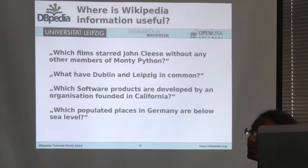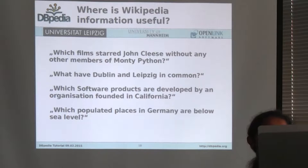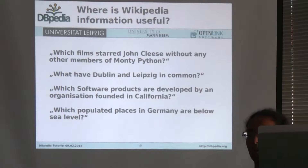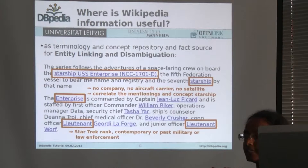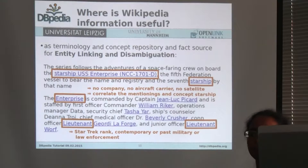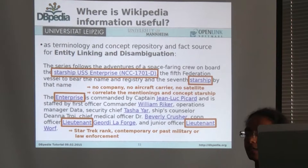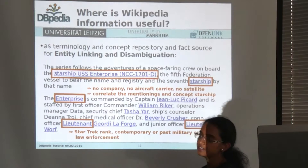Here are some example queries you can run using DBpedia: What do Dublin and Leipzig have in common? Which software products are developed by an organization founded in California? Which populated places in Germany are below sea level? The idea is that with this structured information, you can write a simple query and get what you need. In DBpedia, each page in Wikipedia corresponds to one entity. For example, a Wikipedia page about a Star Trek starship becomes an entity in DBpedia, and DBpedia captures all that information.